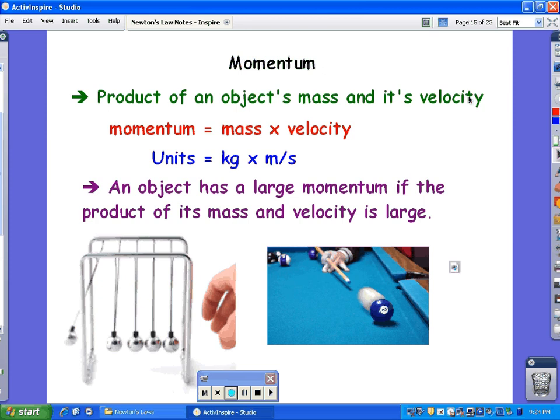Momentum I talked about briefly in class. This can be calculated as well—product of an object's mass and velocity. An object has large momentum if the product of its mass and velocity is large. For instance, a fast-moving train has both a large mass and a large velocity, therefore has a large momentum. Momentum is the ability to stop. It's very hard for a train to stop on tracks because it has such a large mass.